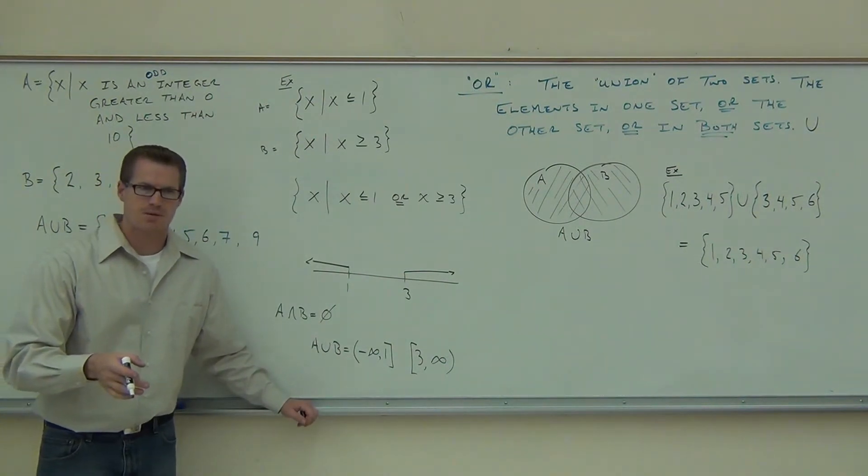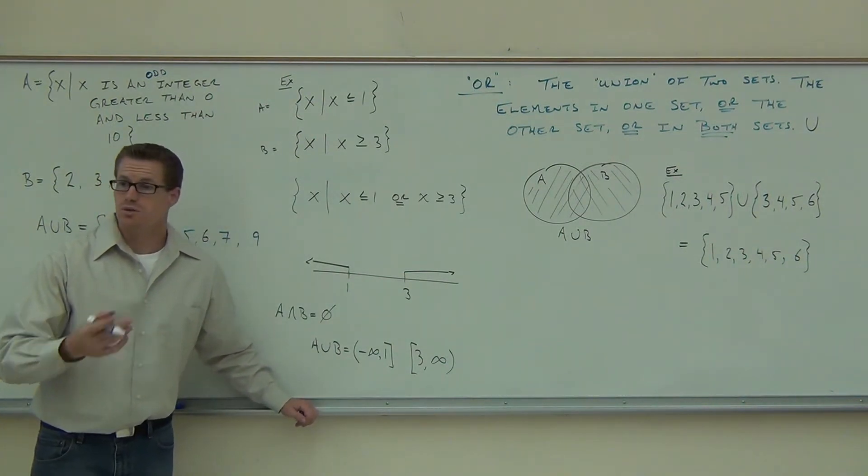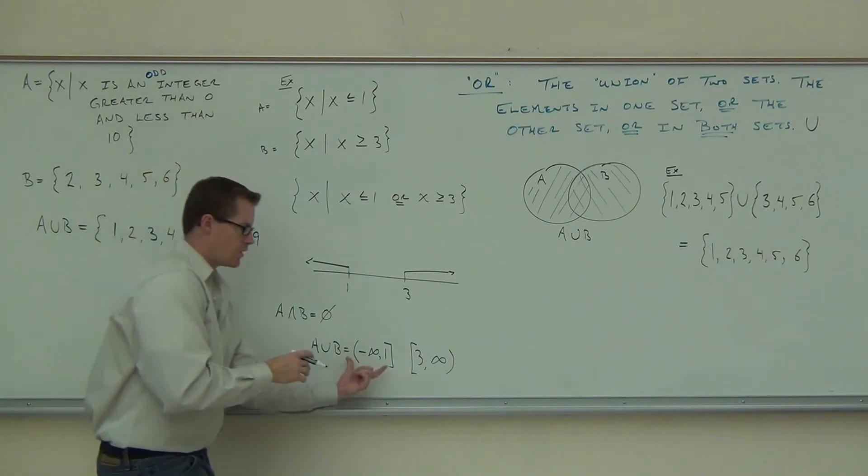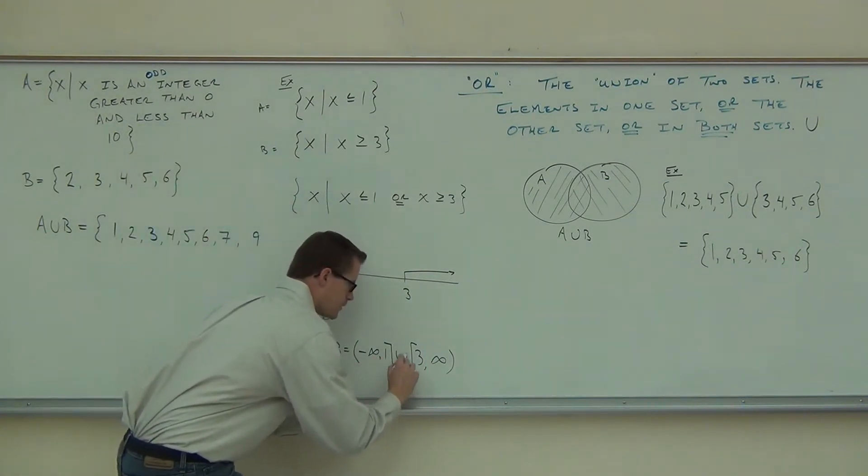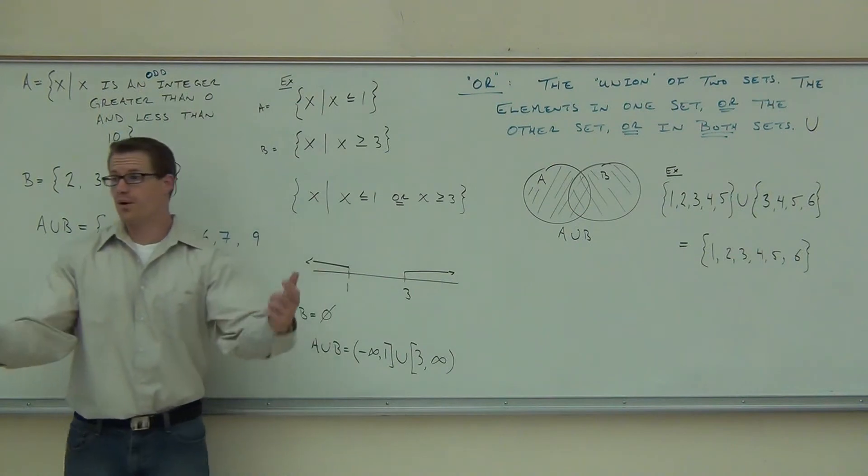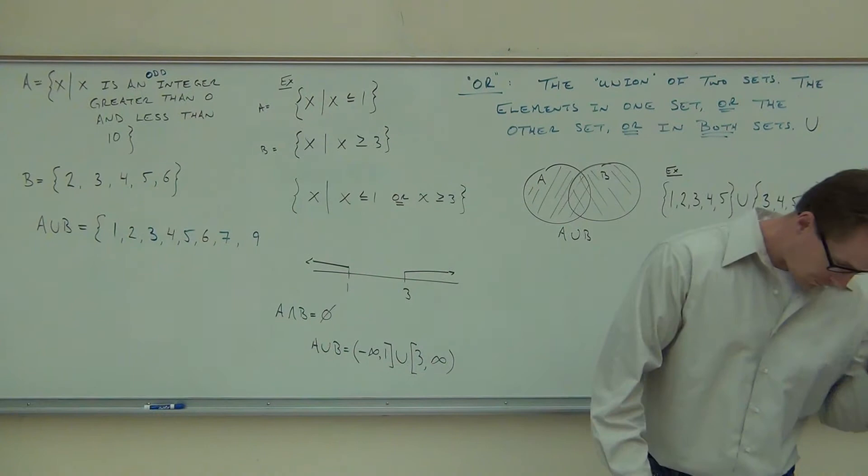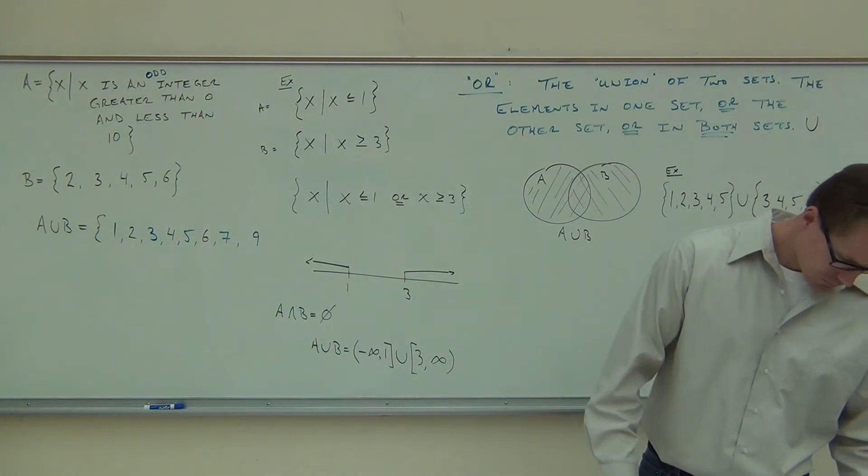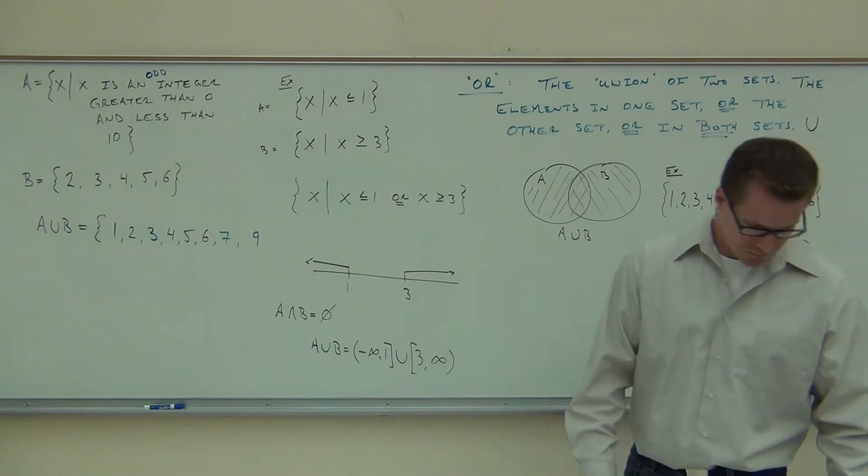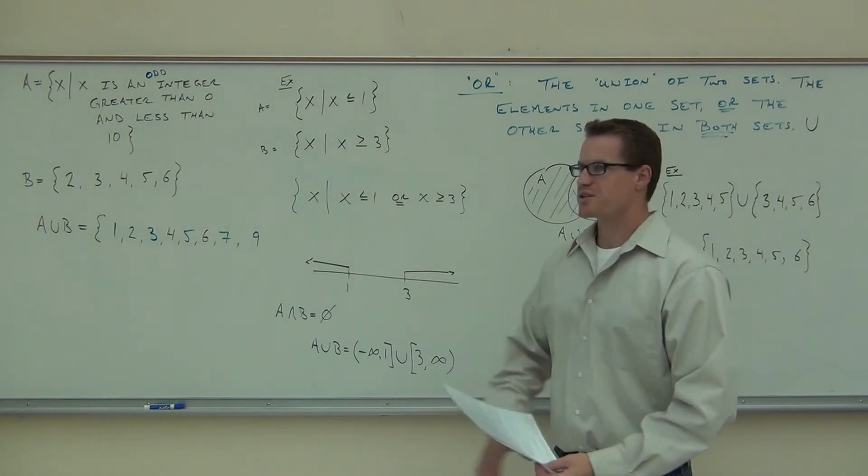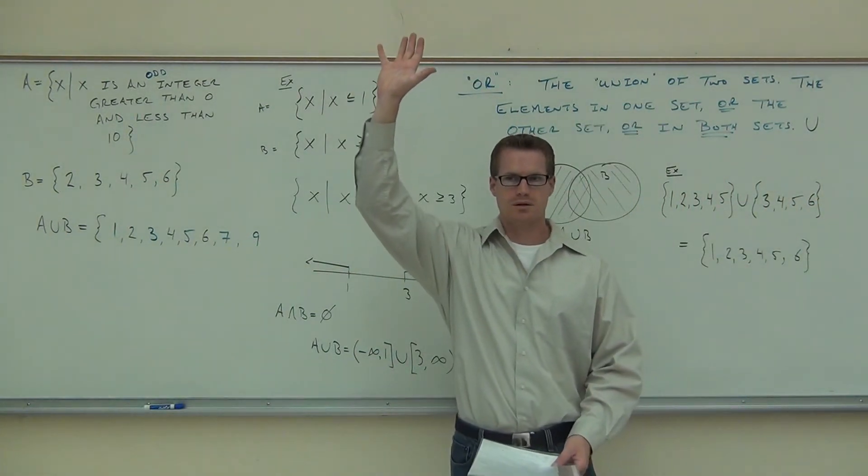And here's what you do between them. Can't forget this part. Since you're talking about the union, what you're saying is, I want this one or this one or both. So that's what you're saying. You have to have that union that combines them.